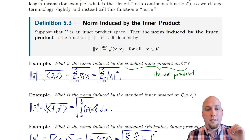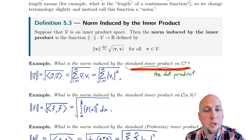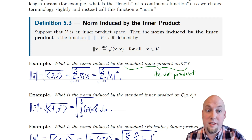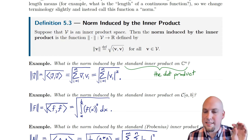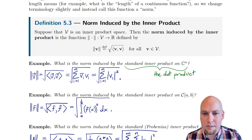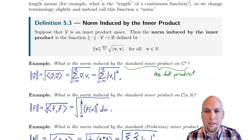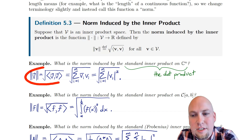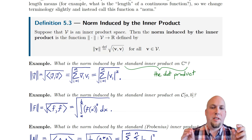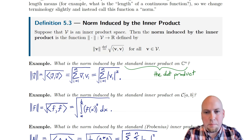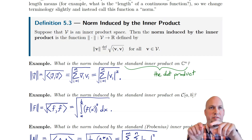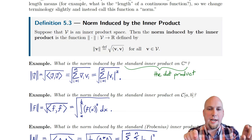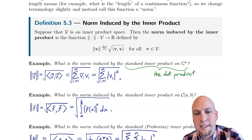Starting off, let's look at the standard inner product on C^N — in other words, the dot product on C^N. What is the norm induced by the inner product in that case? By definition, it's the square root of the inner product of V with V. Plugging in the dot product, it's the sum of all the v̄_i · v_i, and then square root at the end of the day.